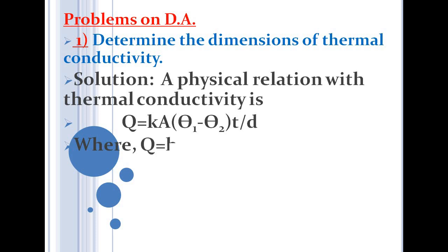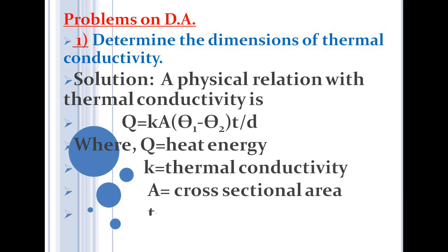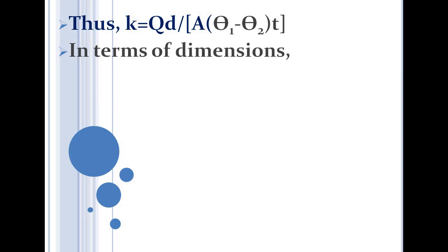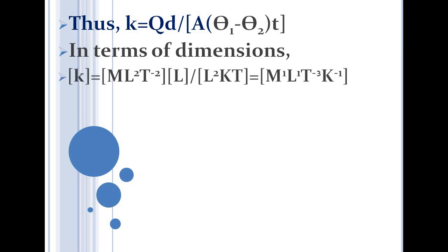Rearranging, K = Q·D / [A·(θ₁ − θ₂)·t]. In terms of dimensions, Q is heat energy, which has the dimension of work done: M L² T⁻². If there is any confusion, recall that work done equals force times displacement, where force has dimension M L T⁻² and displacement has dimension L, giving M L² T⁻².